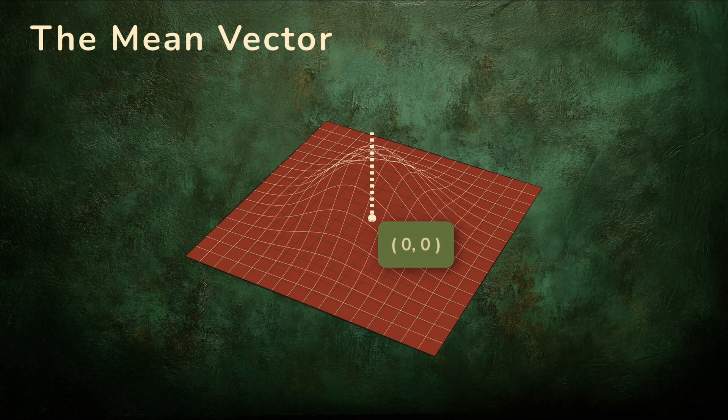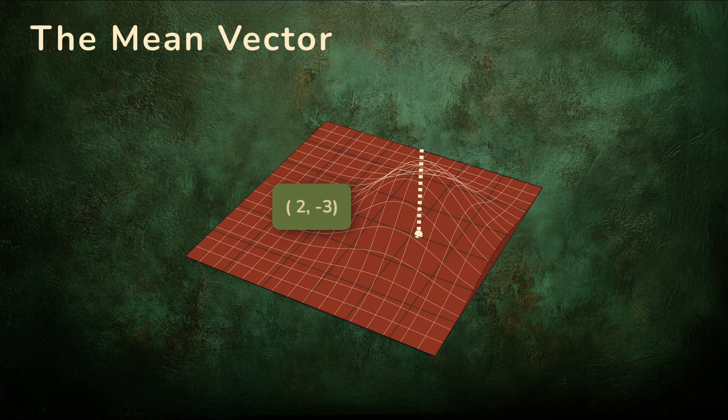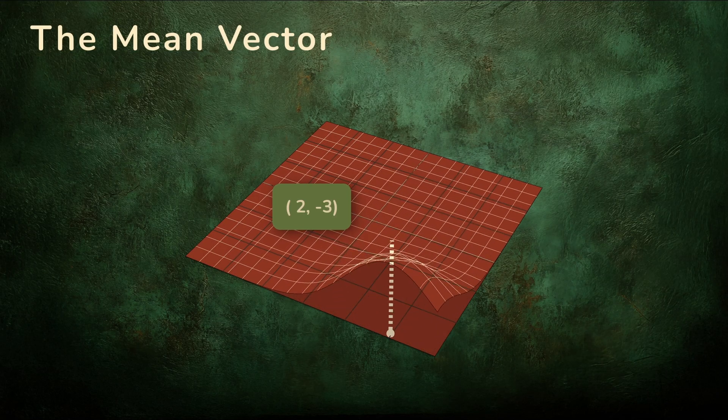If the mean vector is (0,0), the surface is centered on the origin. If it's (2,-3), the whole surface is shifted two units to the right and three units down.